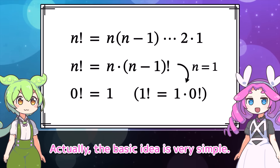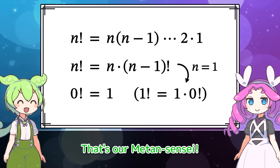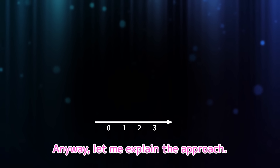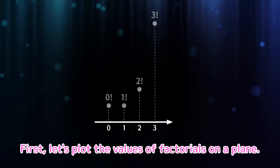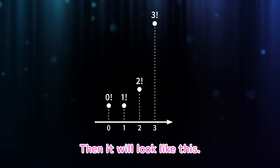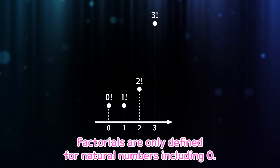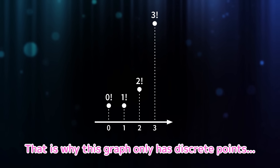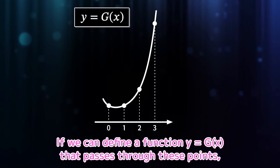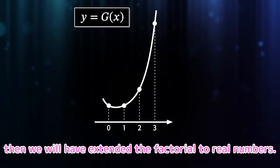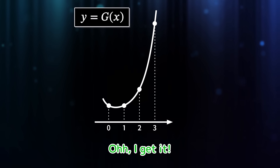How should we extend the factorial? Actually, the basic idea is very simple. Let me explain the approach. First, let's plot the values of factorials on a plane — it will look like this. Factorials are only defined for natural numbers including 0, which is why this graph only has discrete points. If we can define a function y equals g of x that passes through these points, then we will have extended the factorial to real numbers.